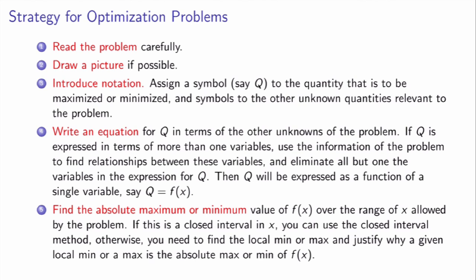Step 4: write an equation for q, the function you want to optimize, in terms of other unknowns in the problem. If q is expressed in terms of more than one variable, there will be information in the problem that allows you to find relationships between these variables and eliminate all but one. In the end you'll rewrite the function as a function of a single variable — exactly what we did, using the fixed volume to eliminate h.